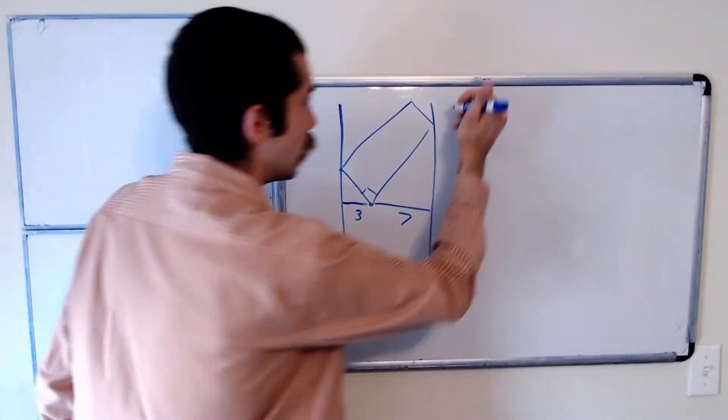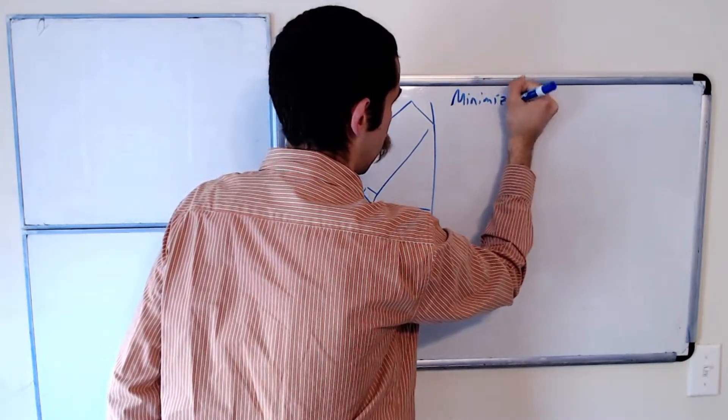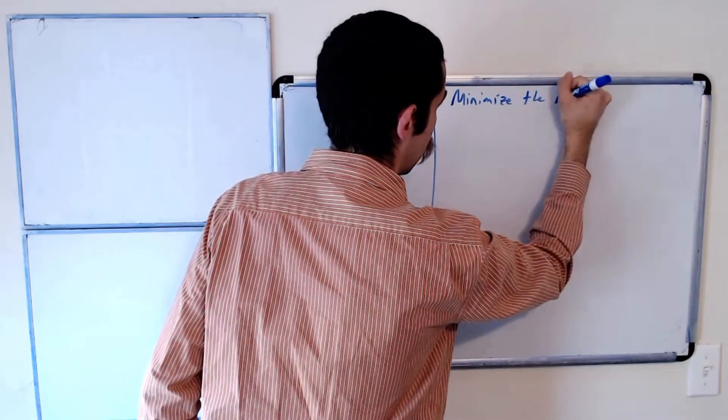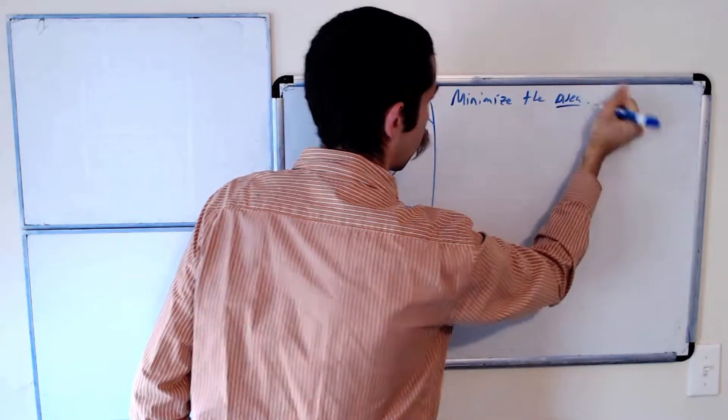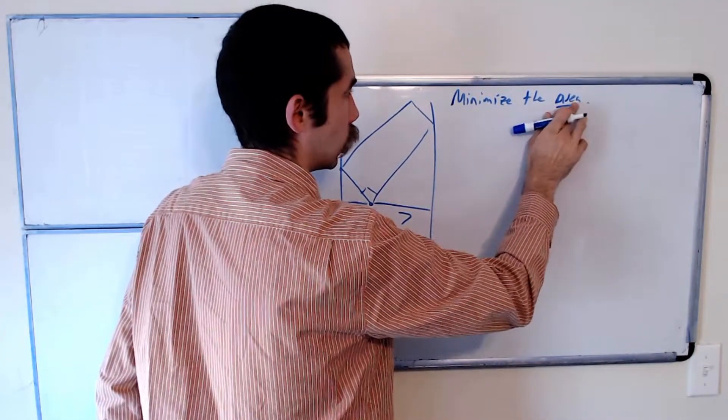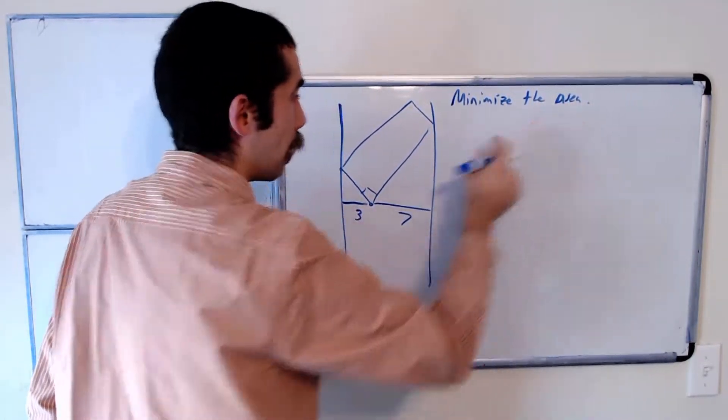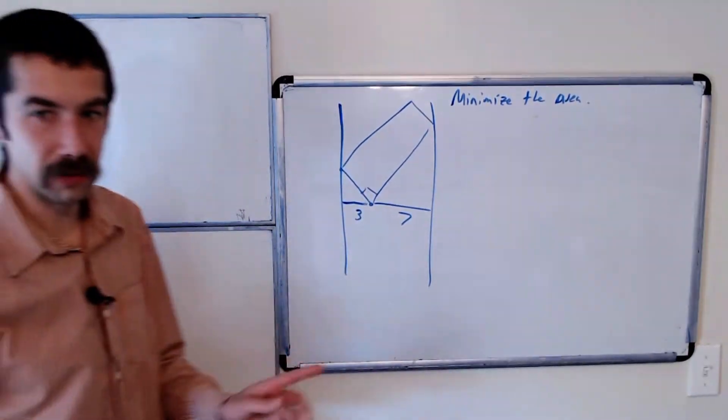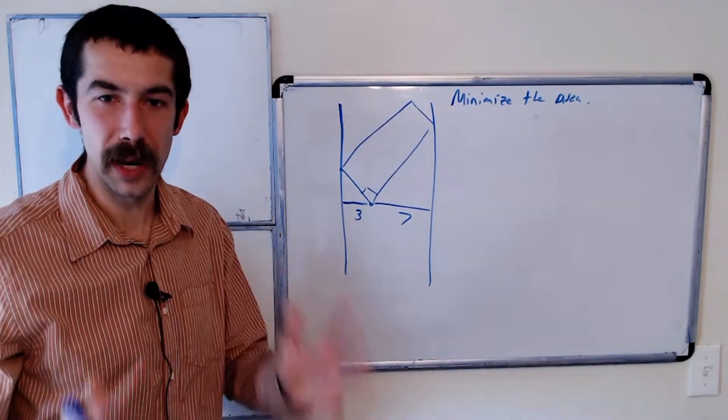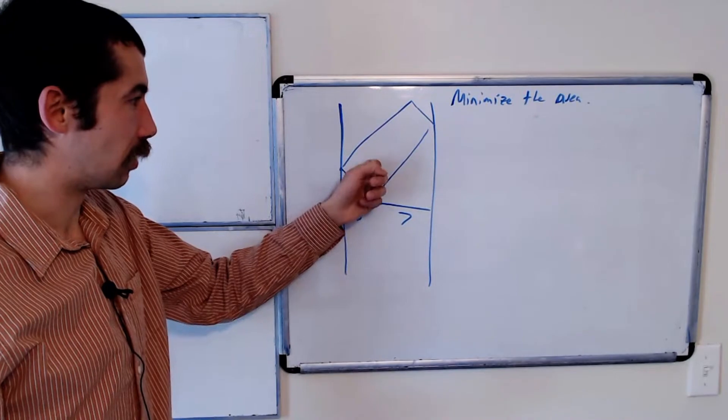And so what I want to do is minimize the area. Not sure why I underlined that. Alright, so I want to minimize the area of this rectangle. So the question is: find the minimum possible area of this rectangle.